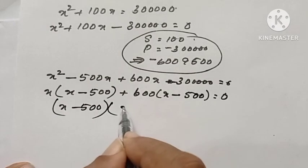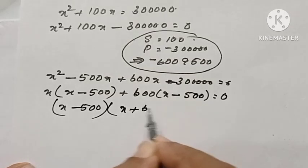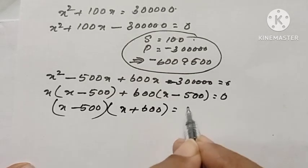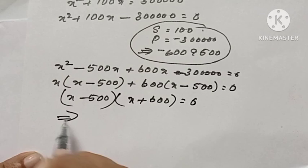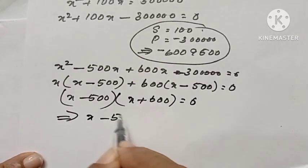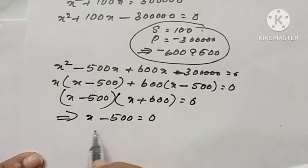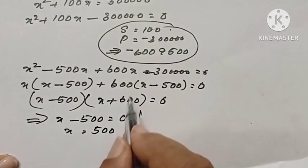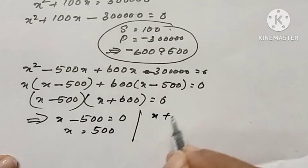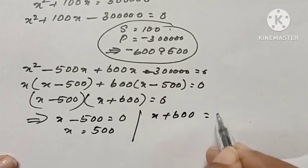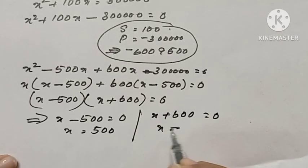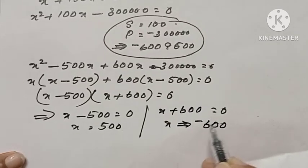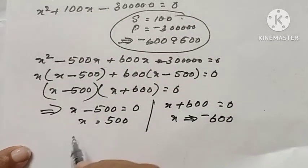x minus 500 is again common, x plus 600 equal to 0. That means x minus 500 is equal to 0, that is x is equal to 500. Next one is x plus 600 equal to 0, that is x is equal to minus 600.